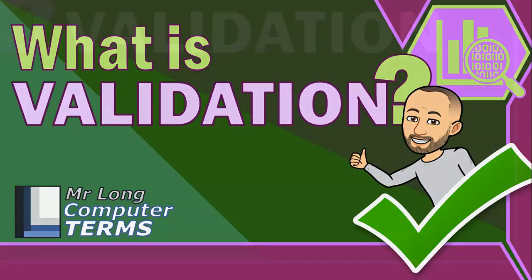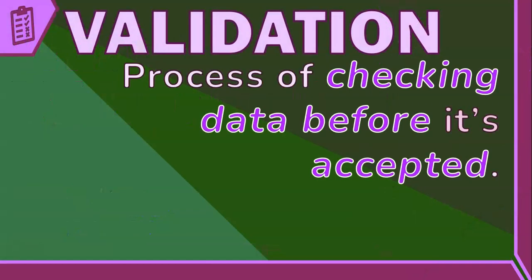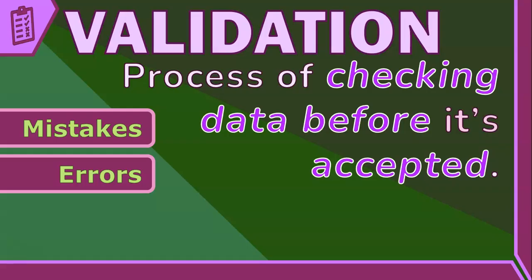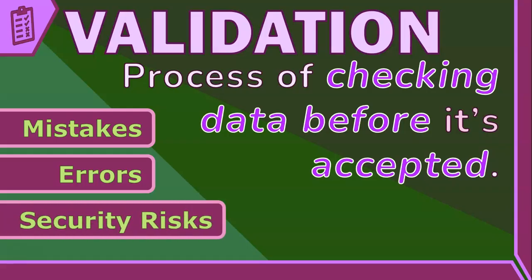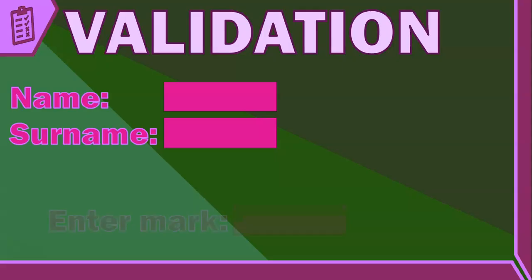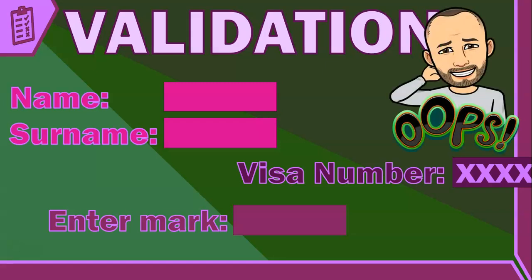What is validation? Validation is the process of checking data before it's accepted. This is often used in computer systems as it helps to avoid mistakes, errors, or even potential security risks, especially when data is being inputted — whether you're filling out an online form, entering grades into a school database, or giving your banking details for an online purchase. Validation ensures that the data is accurate, reliable, and useful.